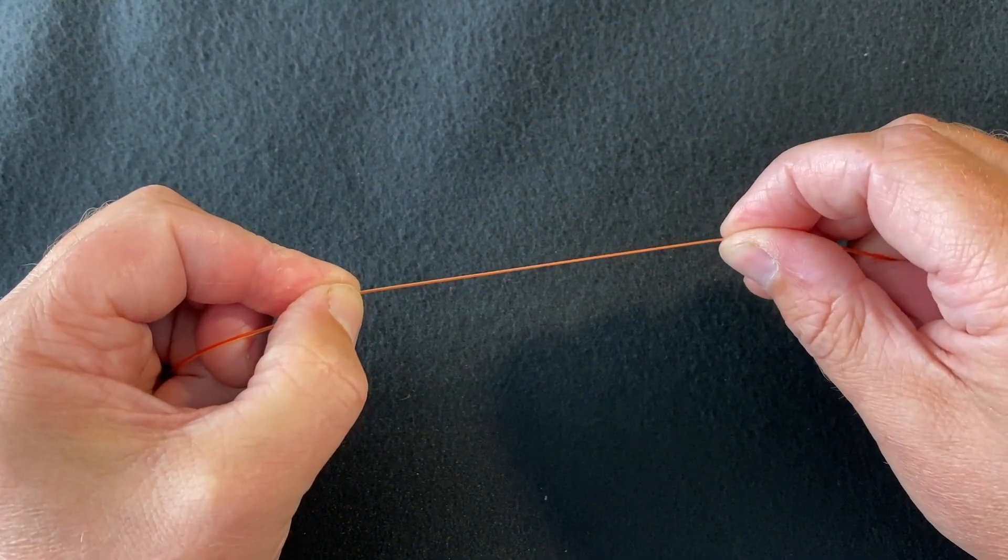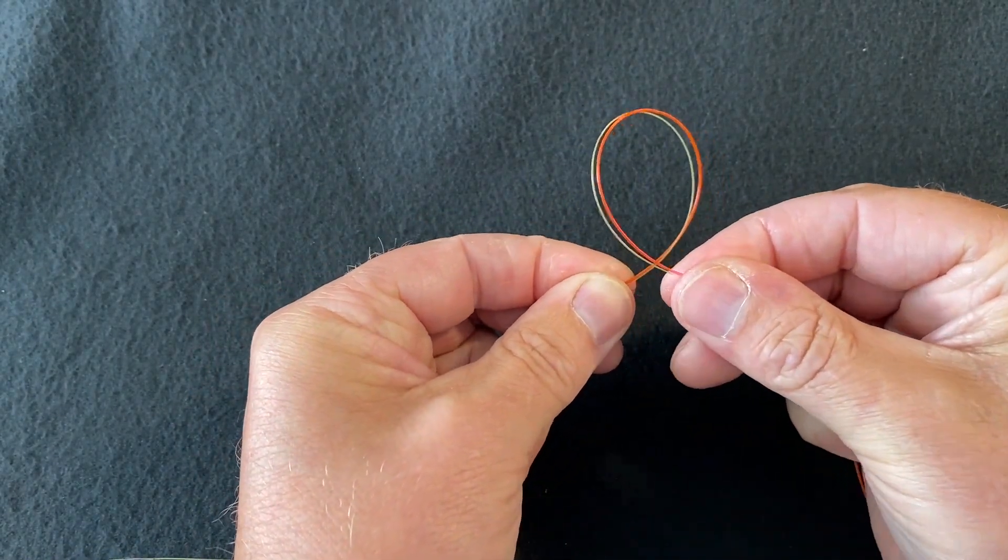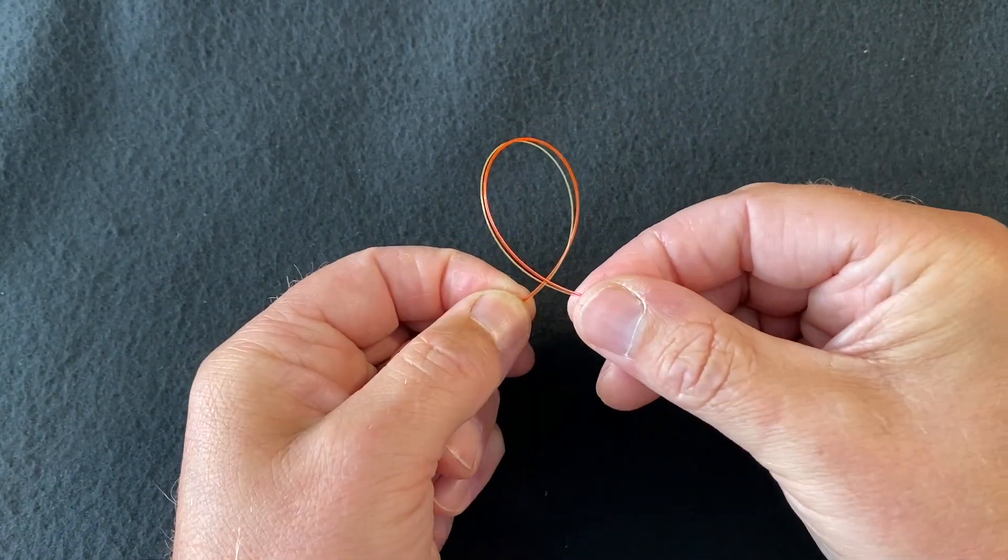Take the two pieces of line and form a loop, crossing over the two lines.